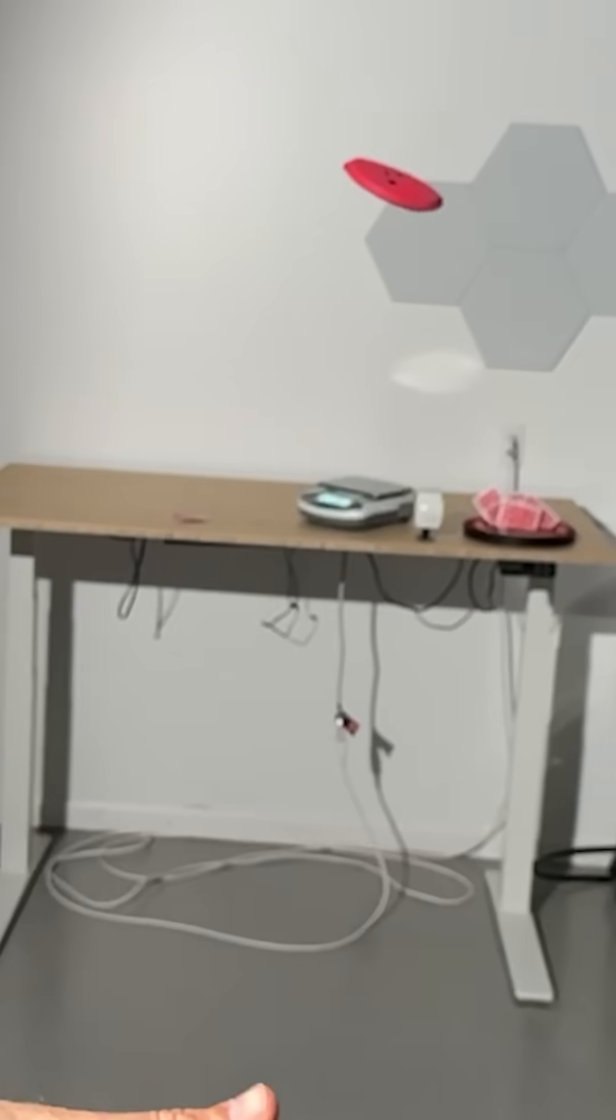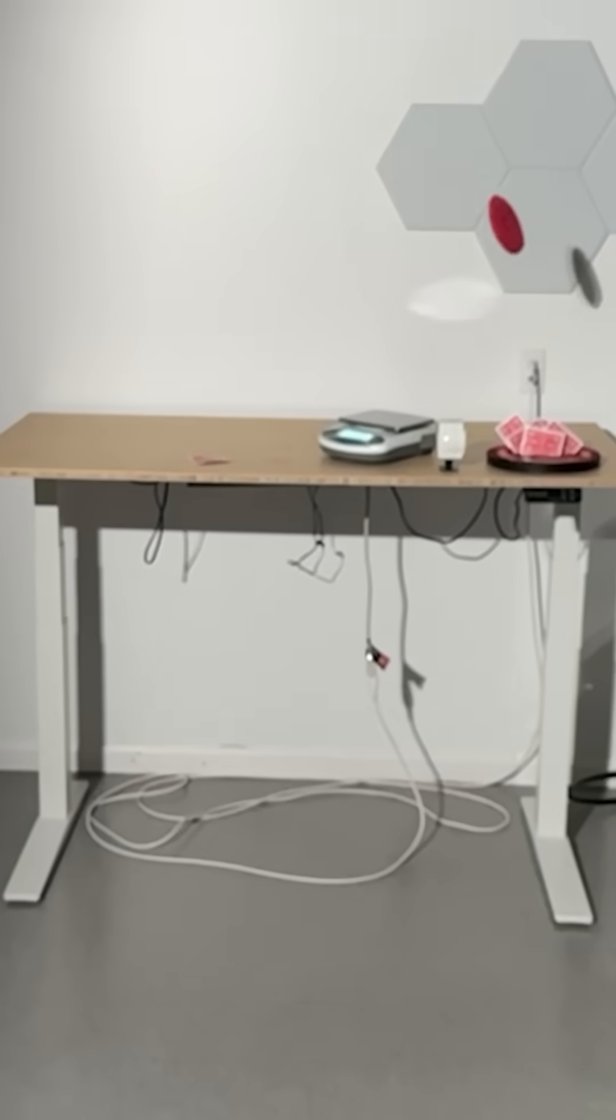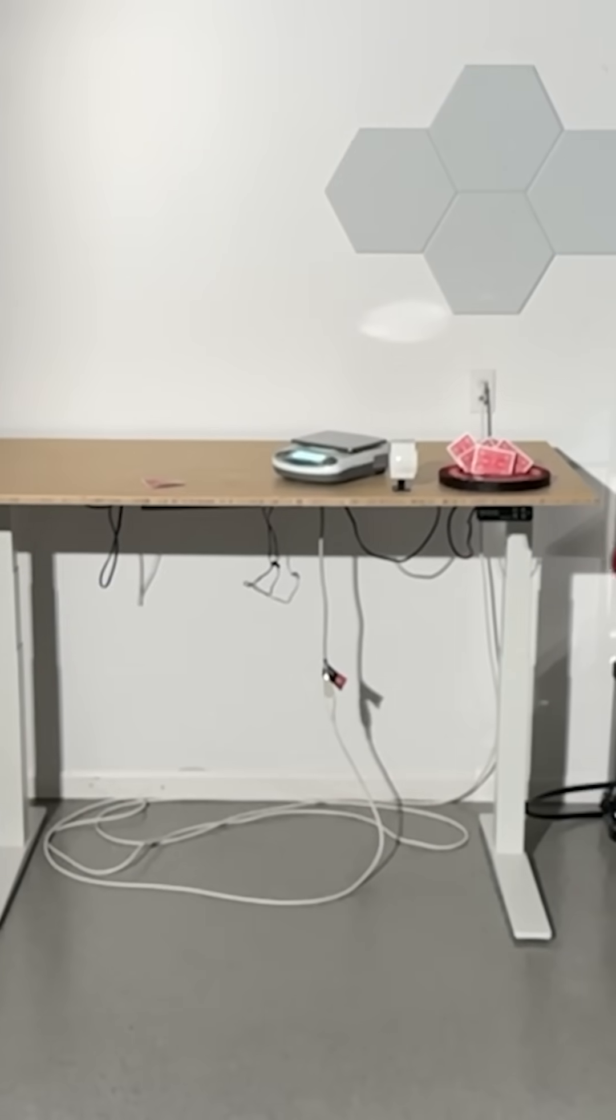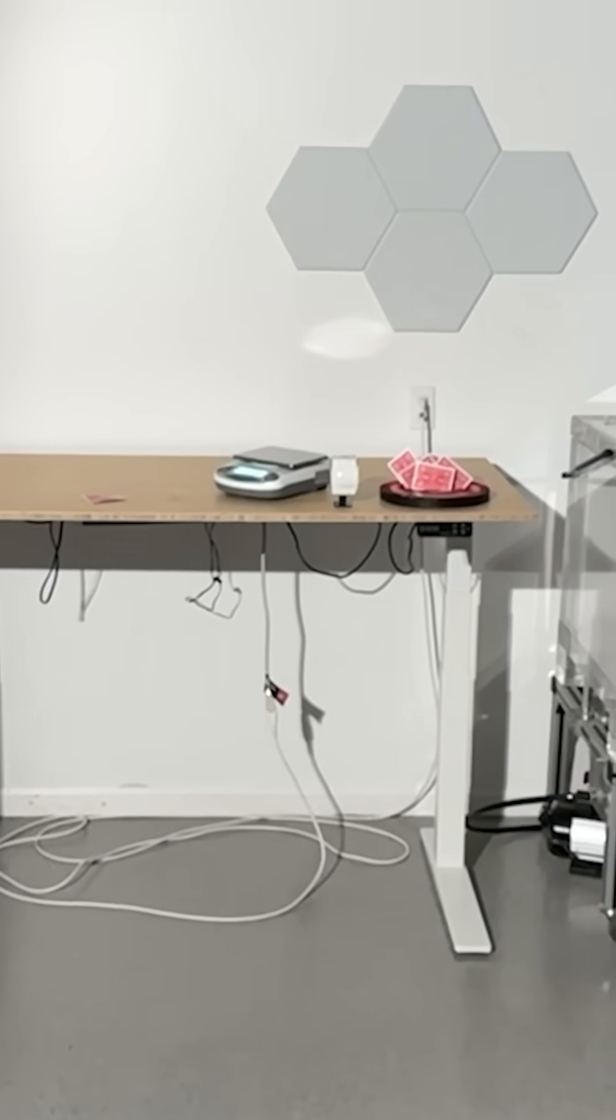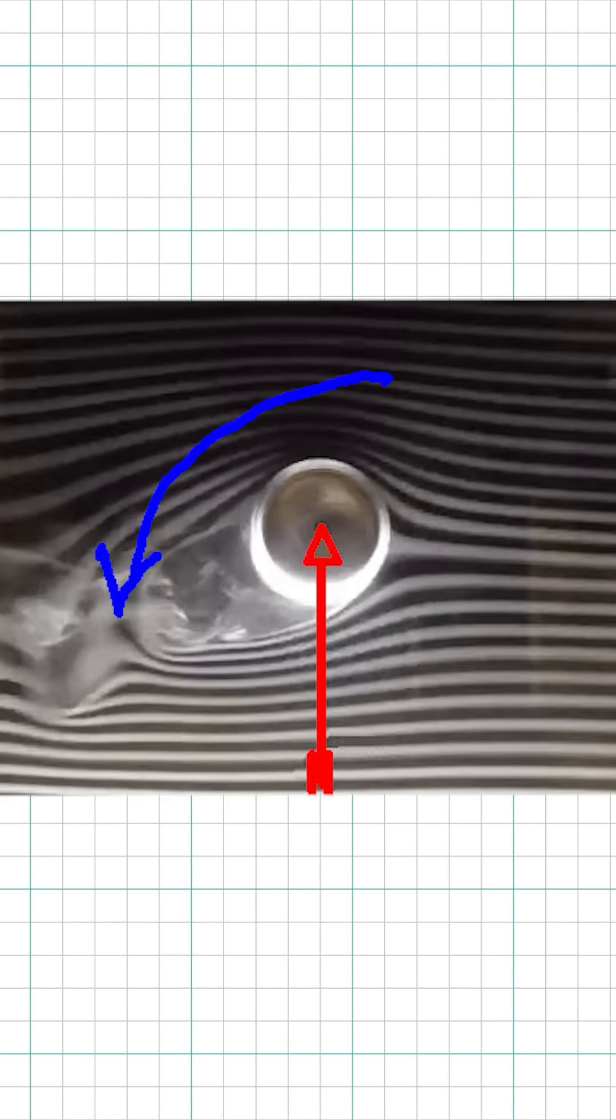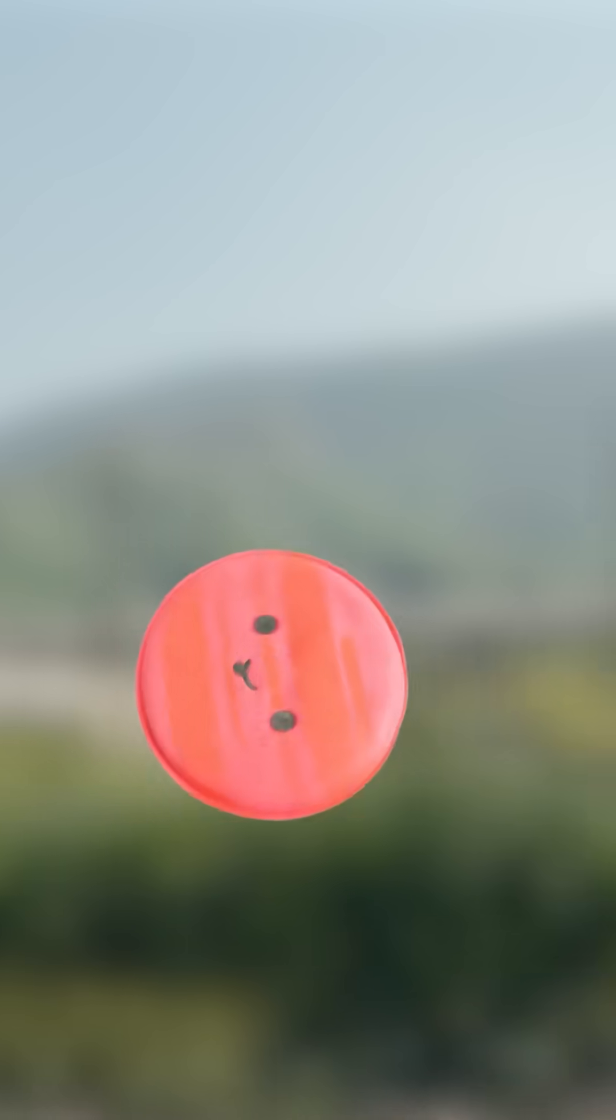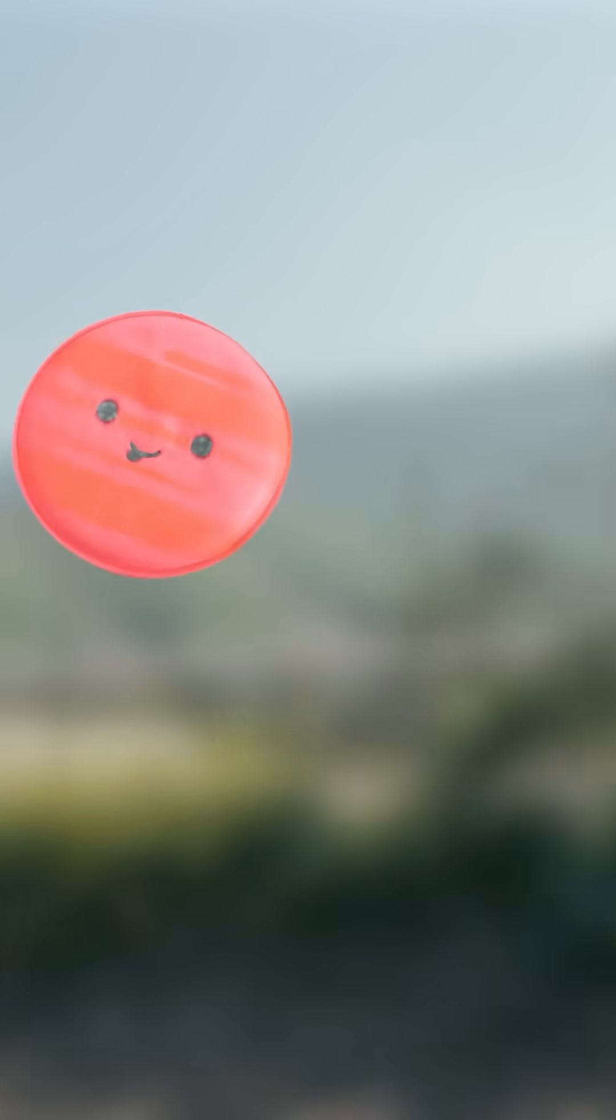This means that no matter how you spin a disc or card when you throw it, it'll always naturally move toward a backspin rotation. And when the object is in a backspin, this creates lift through something called the Magnus effect. This causes the disc to lift in the upward direction. So backspin is the most stable state for a card or disc.